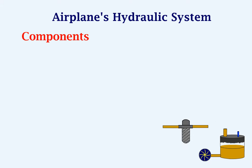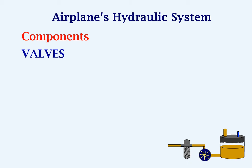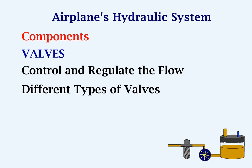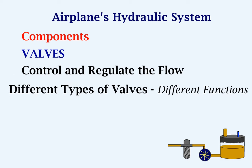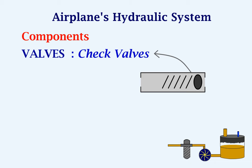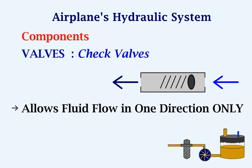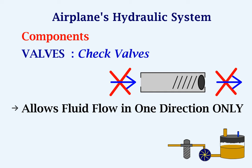The next component we will look at is the valves. Valves are used to control and regulate the flow of the fluid. There are different types of valves that are used for different functions. First, we will look at the check valve. The check valve allows the fluid to flow in one direction only. If the fluid enters from this side, it is allowed to flow to the other side. But if the fluid enters from this side, the check valve closes and the fluid cannot flow to the other side.